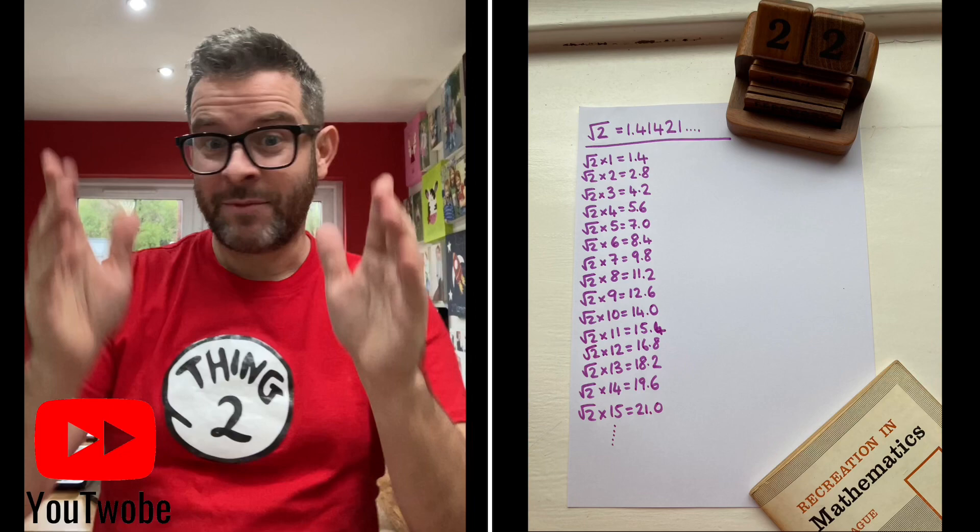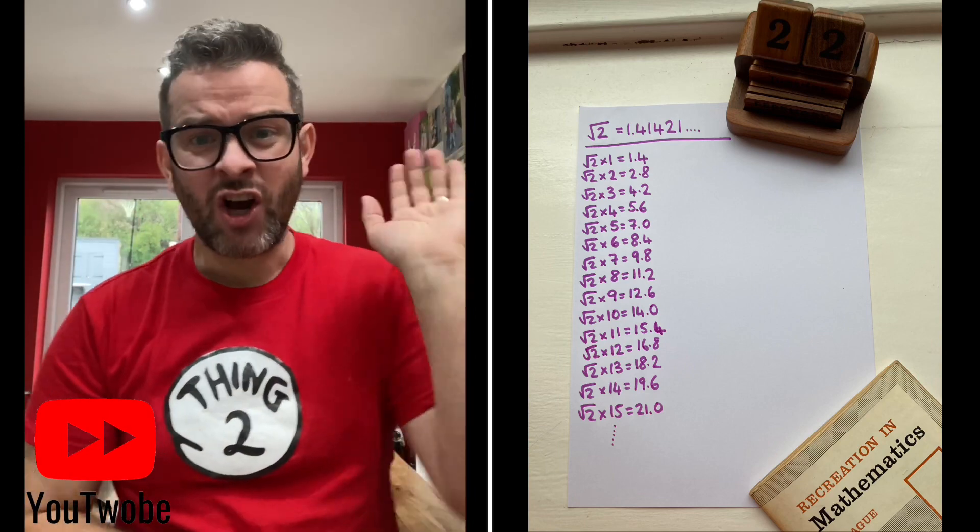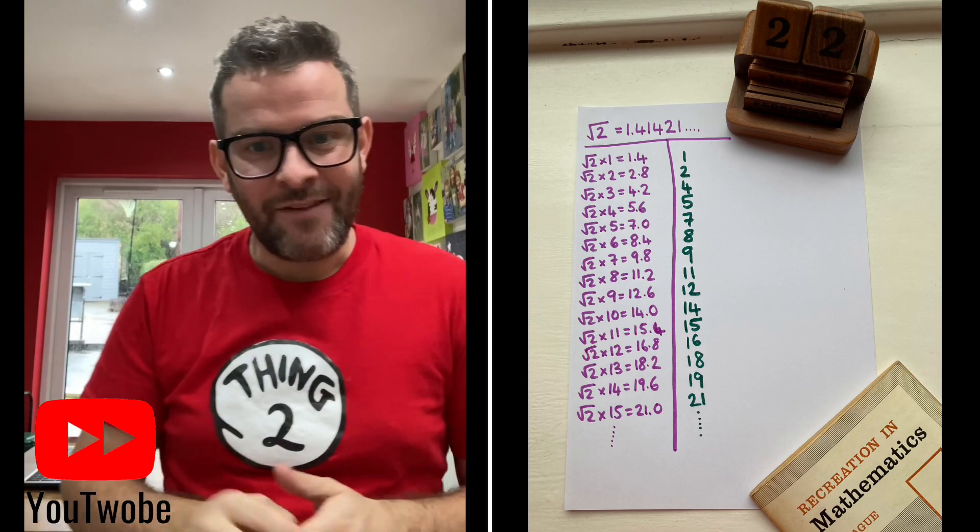Now what I'm going to do is I'm going to add another column and I'm going to chuck away all of those decimal bits. That's just going to leave me with 1, 2, 4, 5, 7, 8, 9, 11, all the way down.